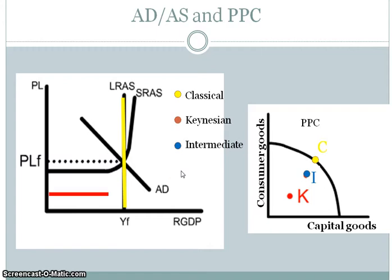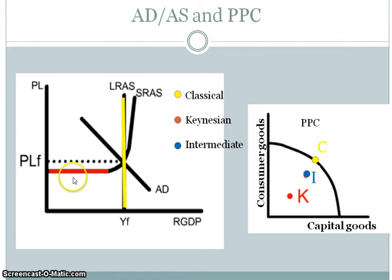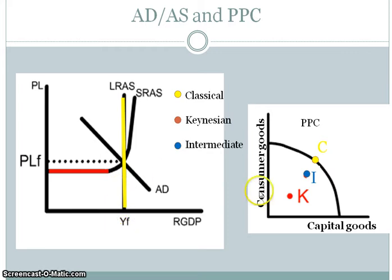Another part of the ADAS model is the Keynesian range. With the Keynesian model, what we're talking about is that in the short-run, wages and price levels are sticky — they're not flexible — meaning that there's not enough time for them to change if the economy is below that full employment level. So if we're not at the full employment level, that means we have to be somewhere below the production possibility curve.